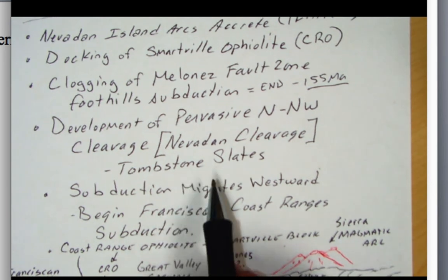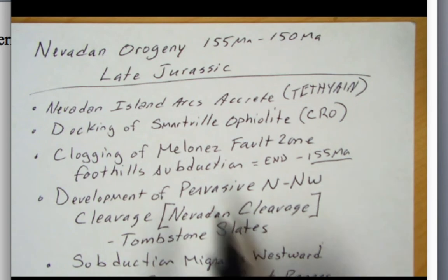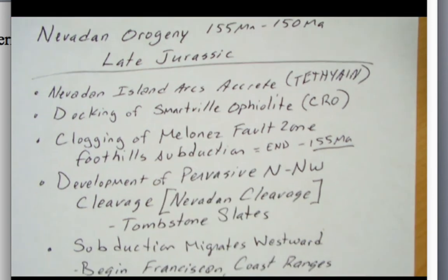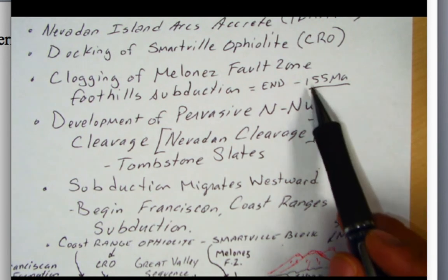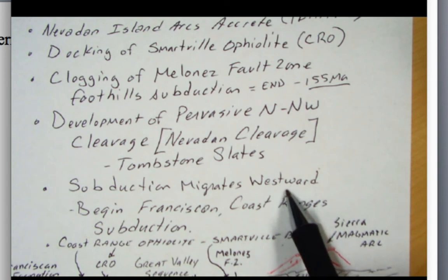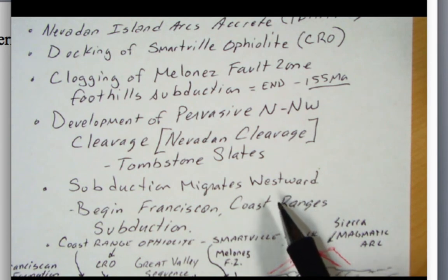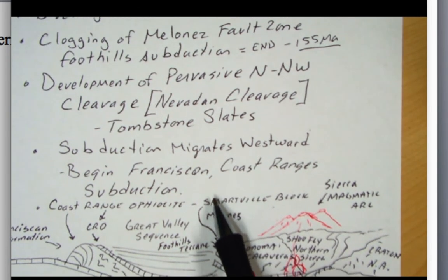They formed during this Nevadan orogeny, late Jurassic. And then the other thing that's happening is because we clogged up that Maloney's fault zone foothill subduction, subduction had to go someplace else. And where it went, it went westward to the current coast ranges. So now we're going to form the coast ranges, or at least the older rocks of the coast ranges, and we begin this Franciscan coast range subduction.